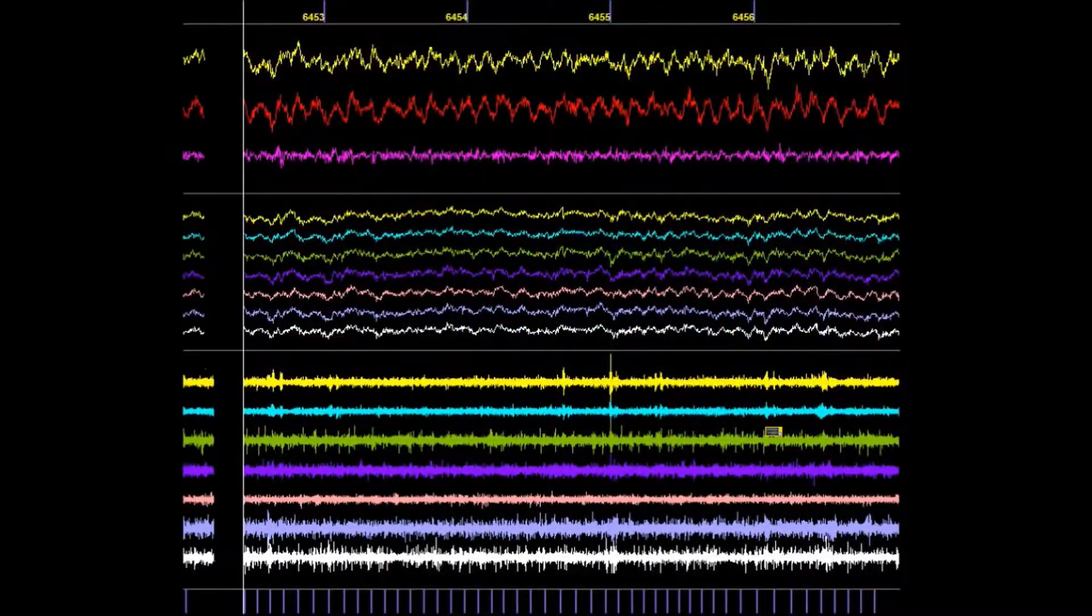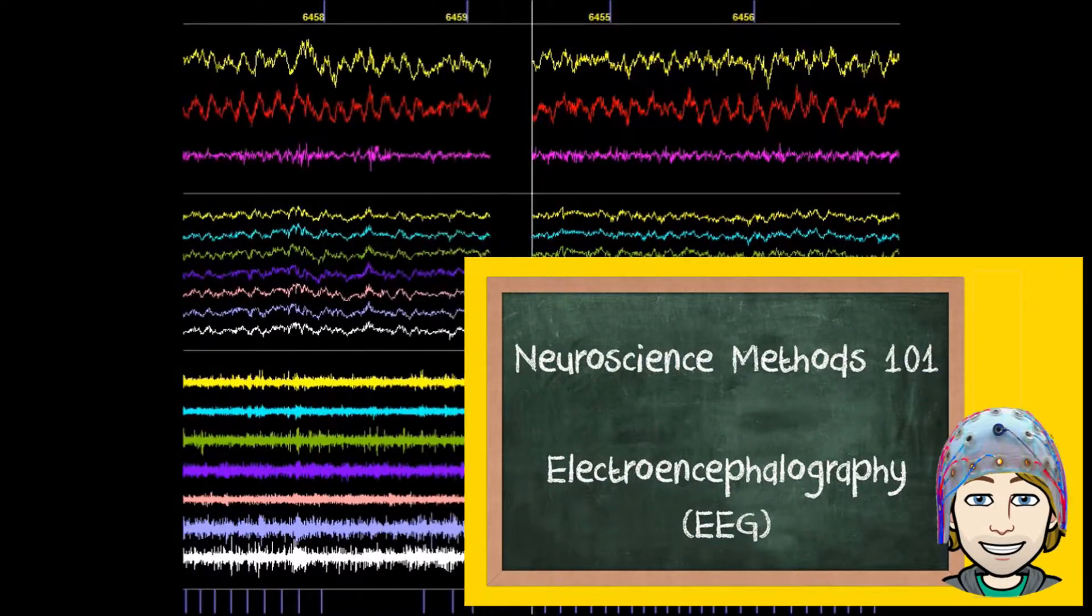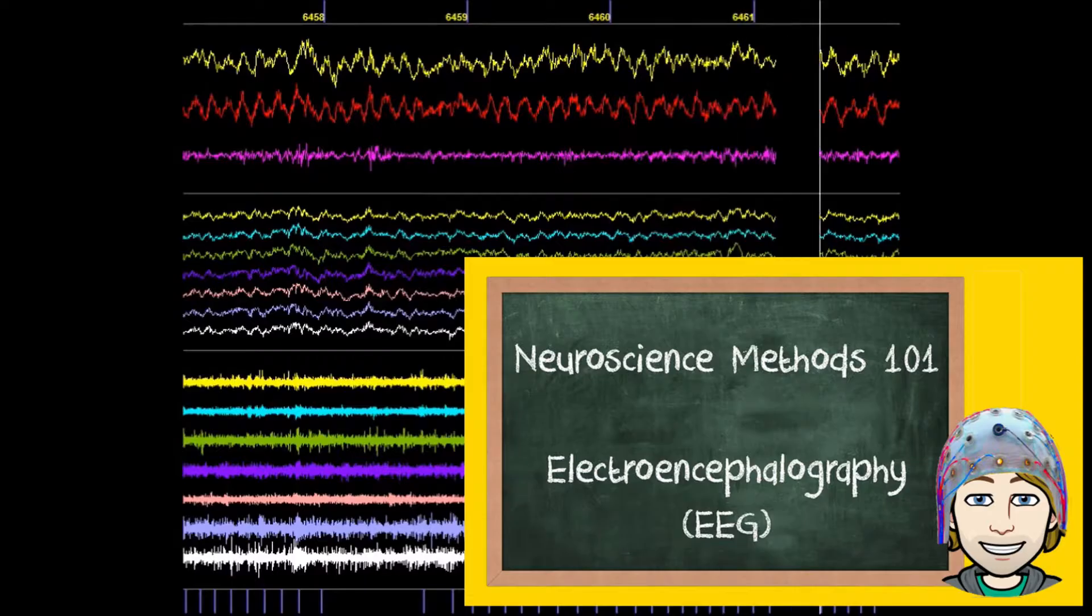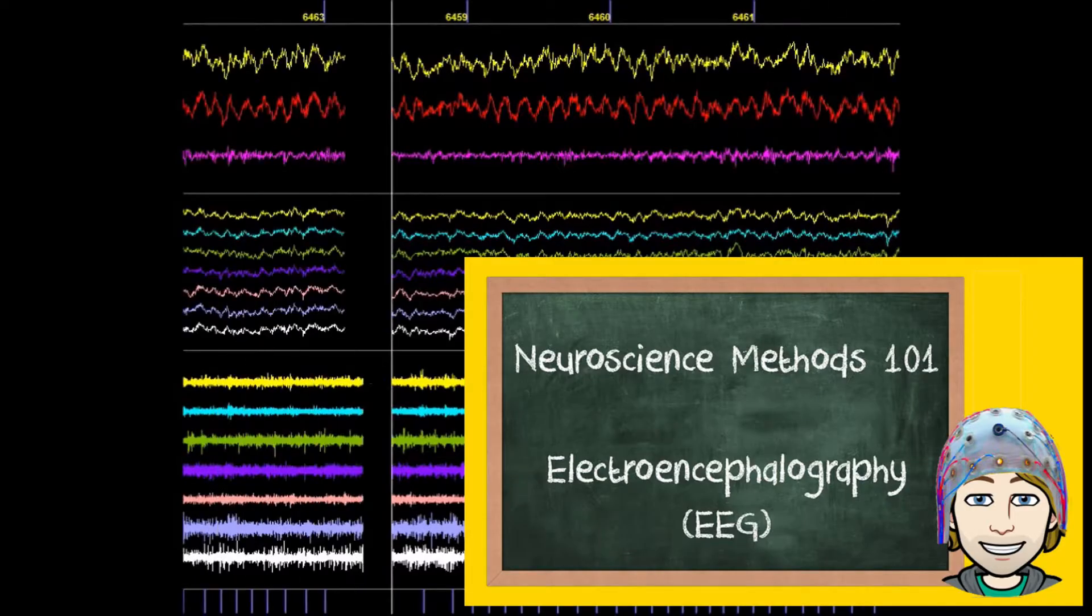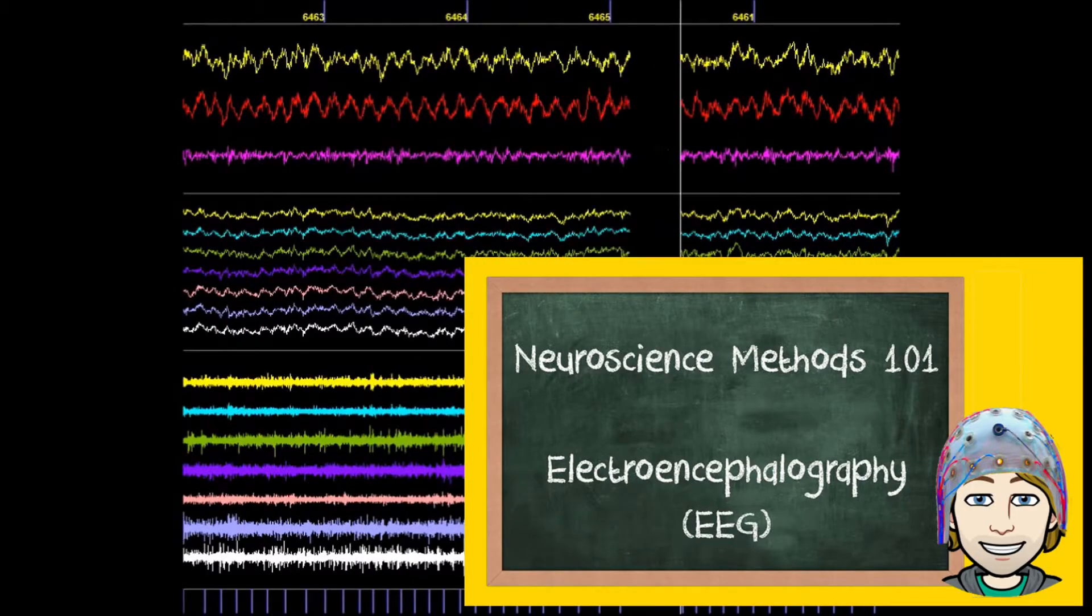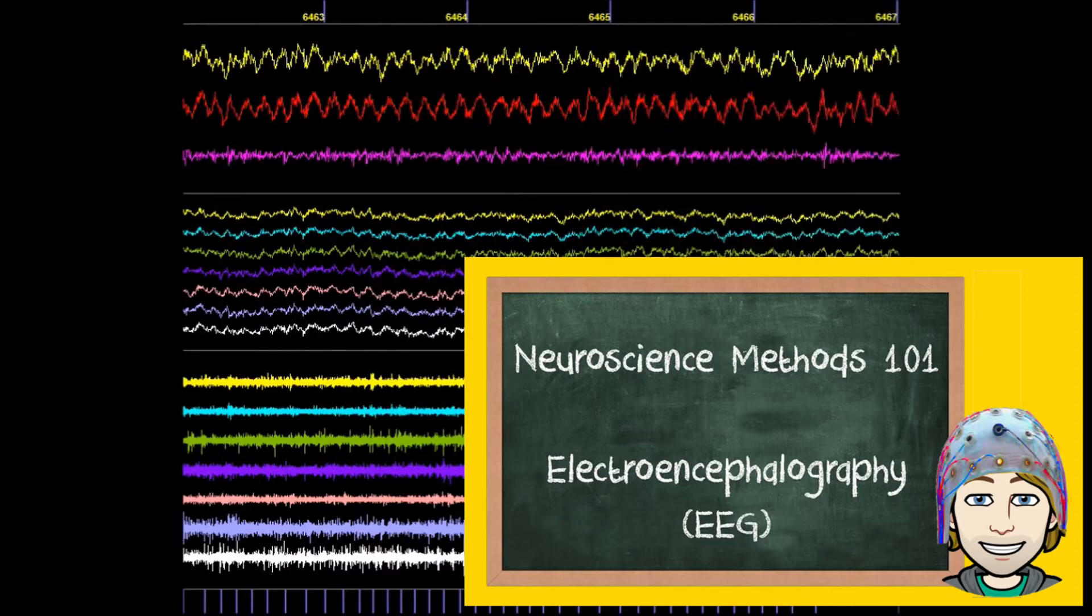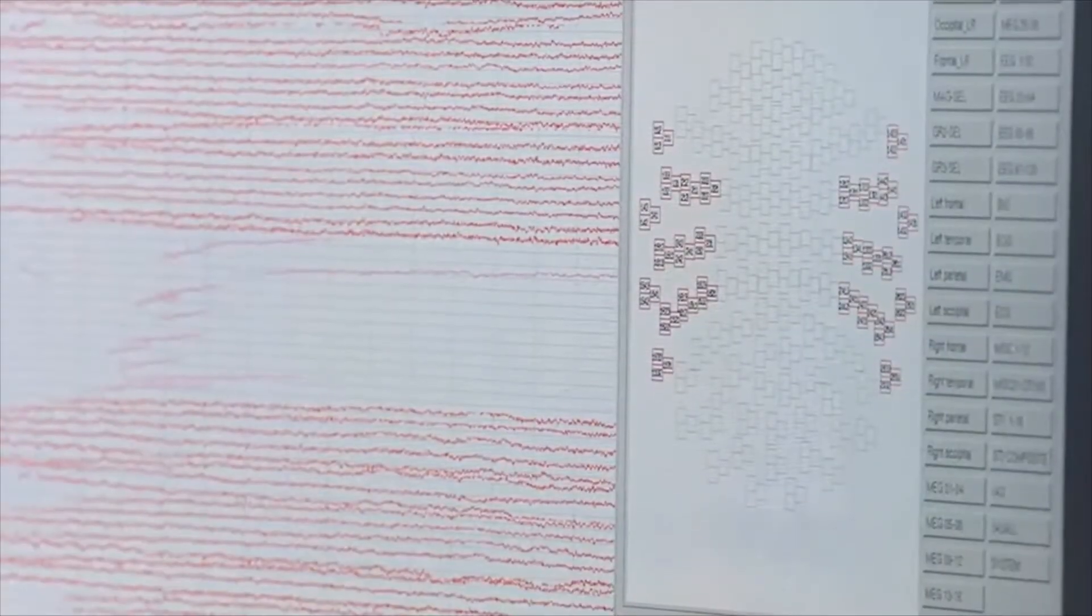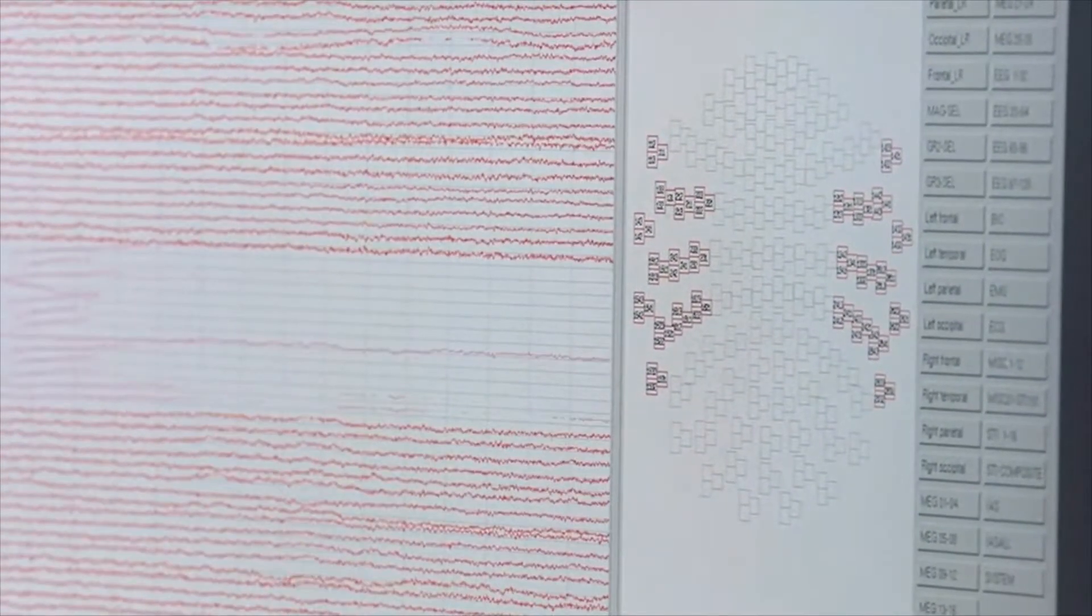In an earlier video we discussed how electroencephalography, or in short EEG, can pick up small fluctuations of electrical activity produced by groups of neurons. Since magnetoencephalography picks up similar neurophysiological processes, first let's quickly recap in a few sentences how EEG picks up these signals.